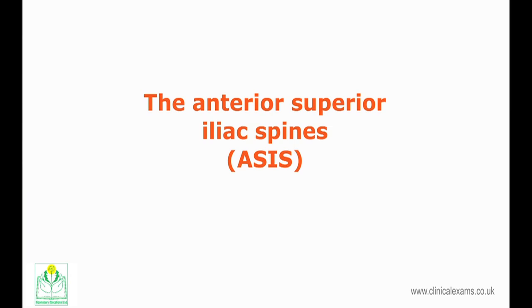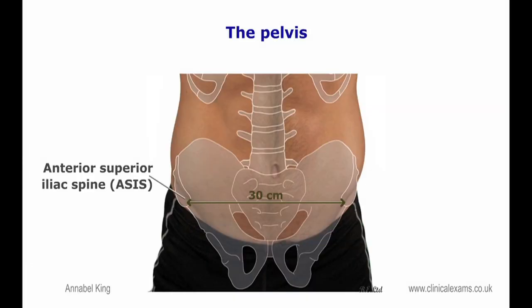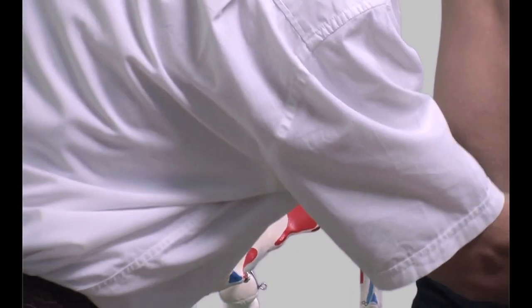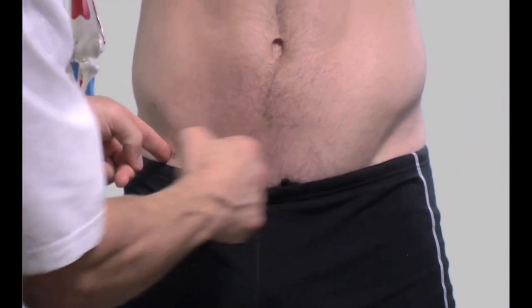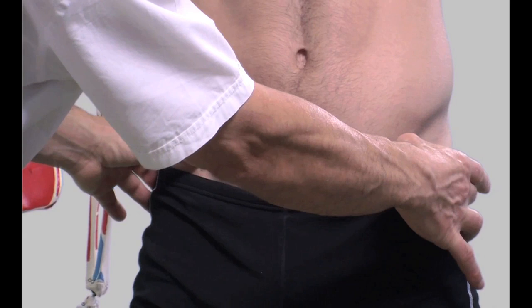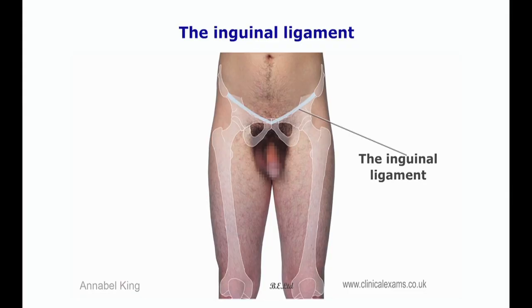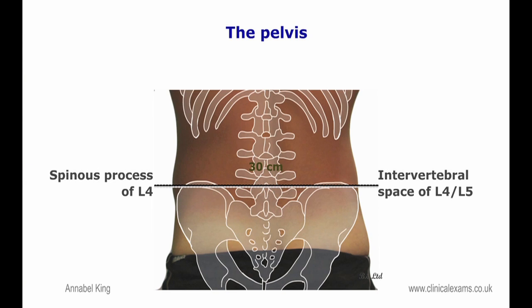The anterior superior iliac spine refers to the anterior extremity of the iliac crests of the pelvis. They are held approximately 30 cm apart, but slightly wider in females. They provide attachments for the inguinal ligament, the sartorius muscle, and the tensor fasciae latae. The anterior superior iliac spine is an important landmark of the surface anatomy. The apex of the iliac crests crosses the spinous process of L4, or it is at the level of the L4-5 intervertebral space in about 80% of the population.